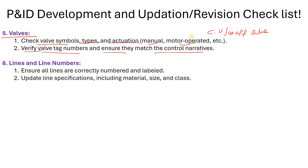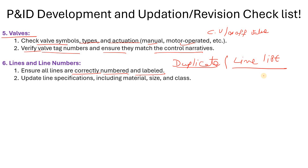Then your lines and line numbers — always ensure that all lines are correctly numbered and labeled. There should be no duplicate line numbers, and this can be caught from the line list when you prepare it. If there is a duplicate line, the piping engineer will have difficulties in their documents.